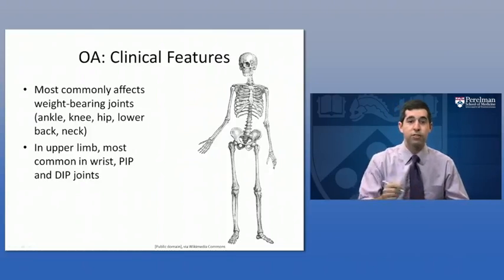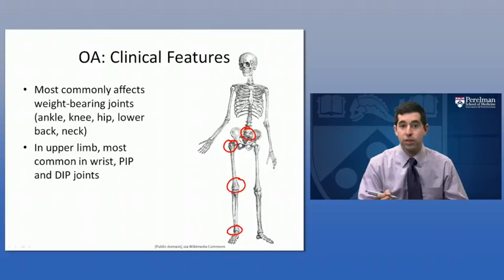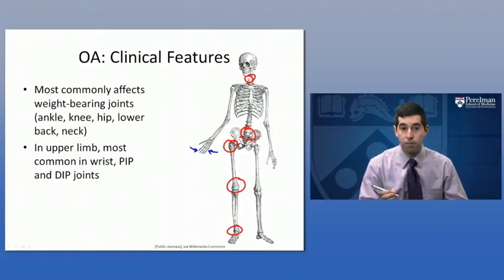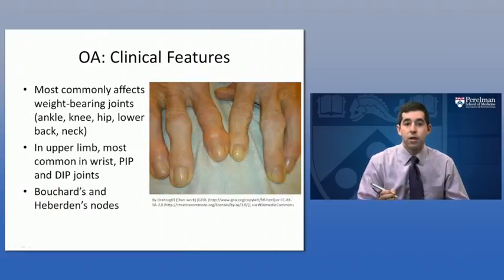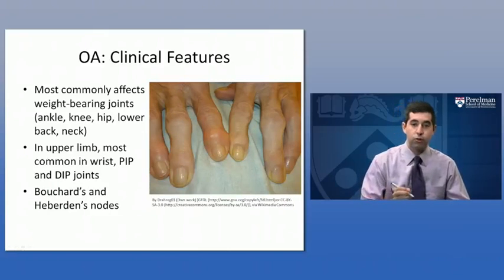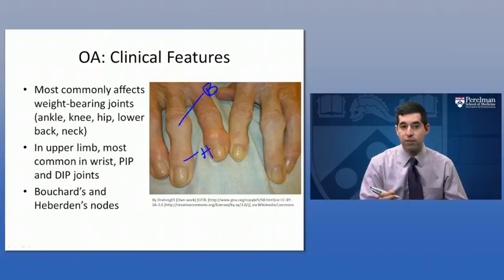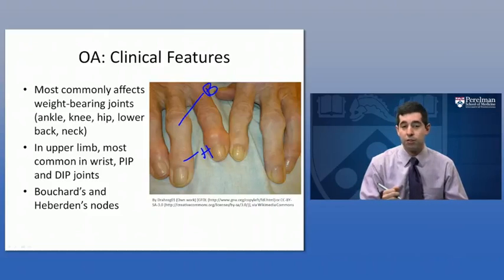Some of the clinical features of osteoarthritis: it most commonly affects the weight-bearing joints — the ankles, the knees, the hips, sometimes the lower back and sacroiliac joints, and the neck. But in the upper limb, most commonly it affects some of the small joints of the hand, usually the distal interphalangeal joints and the proximal interphalangeal joints. In particular, when we look at those joints, we may see what are referred to as Bouchard's and Heberden's nodes. Bouchard's nodes occur at the proximal interphalangeal joint, and Heberden's nodes occur at the distal interphalangeal joint. In both cases, it's essentially an expansion of the bone of the joint, and there may be some osteophytes seen on an x-ray as well.